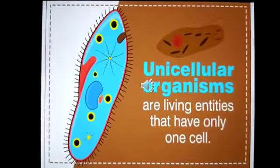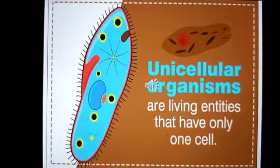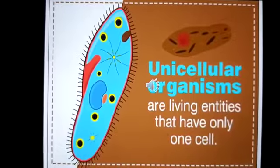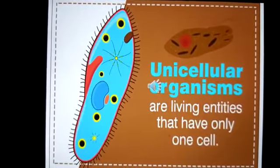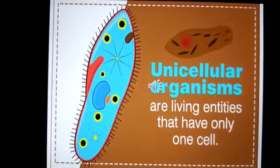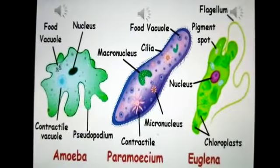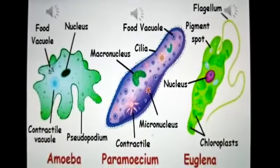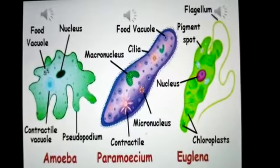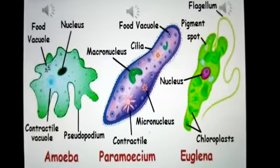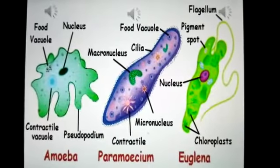The next practical is the diagrams of unicellular organisms. Unicellular organisms are those living entities that have only one cell, and you can see these microorganisms under a microscope. The first microorganism mentioned here is amoeba. In its diagram, a nucleus is present, two vacuoles — food vacuole and contractile vacuole — and pseudopodium, a false foot.